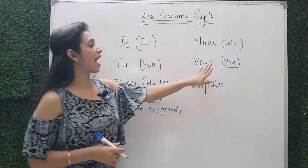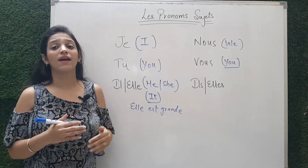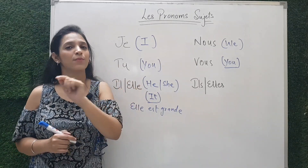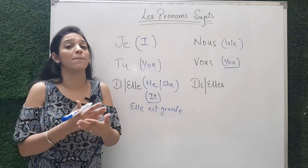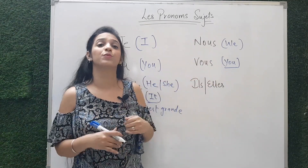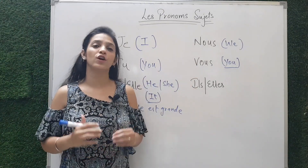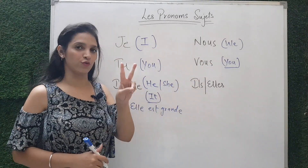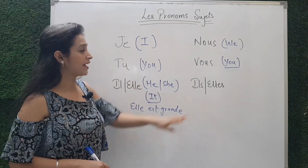Tu is informal and vous is formal. Vous is used for two things: first, when there are many people — for example, tu as in 'tu es beau' means one child in front of me, but 'vous êtes beaux' is used when many people are in front of me. Second, vous is used for giving respect, so when talking to elders you use vous. So vous is the formal, plural form.